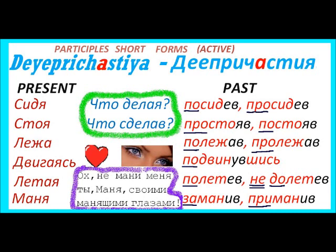The present form answers the question ЧТО ДЕЛАЯ? — doing what? The past form answers ЧТО СДЕЛАВ? — having done what? You will look at the endings so that next time when you are in a text you will recognize them — that they are from verbs and these are short forms of participle, Деепричастие. Let's look at present forms — all of them will have endings Я or А, sometimes А, sometimes Я.